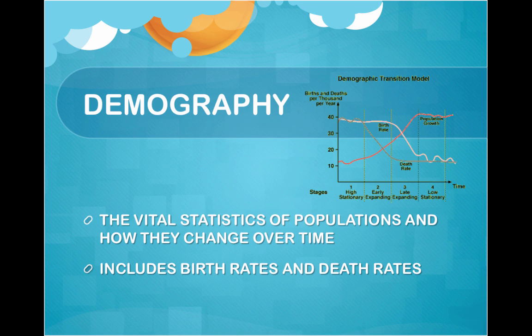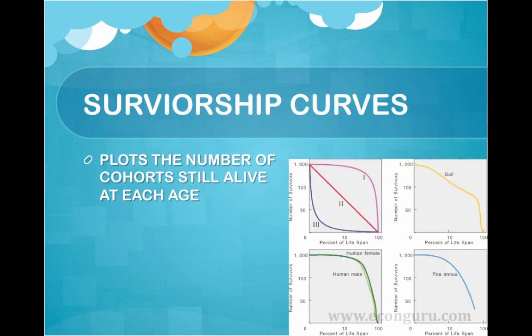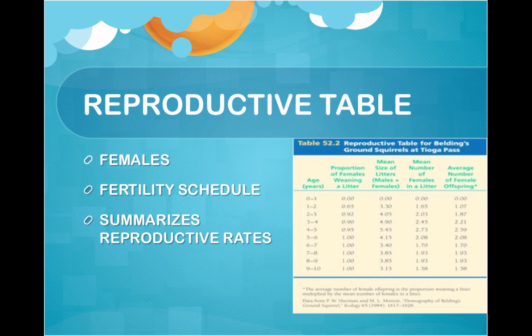Demography is the vital statistics of populations and how they change over time. It includes birth rates and death rates. Life tables summarize survival patterns by age. They can be constructed by following a cohort, which is a group of individuals the same age from birth to death. Survivorship curves plot the number of cohorts still alive at each age. Often, females are studied using a reproductive table, also called a fertility schedule, which summarizes reproductive rates.